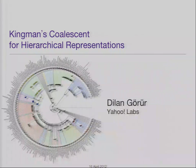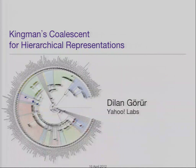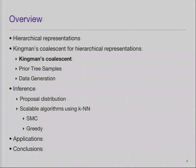Today's talk is about Kingman's Coalescent for hierarchical representations. I apologize if this doesn't flow as well as the other talks — I had a little short of time to prepare and may need to switch between slides. I'll first explain hierarchical representations, then Kingman's Coalescent, then how to construct models, sample from the prior, generate data, do inference, and finally some applications.